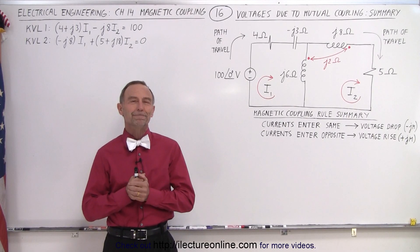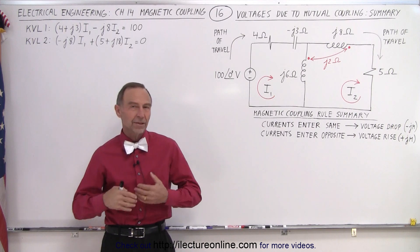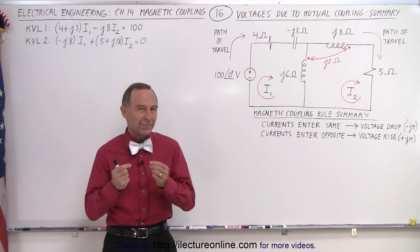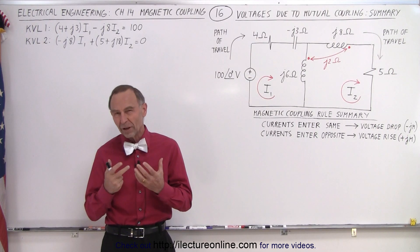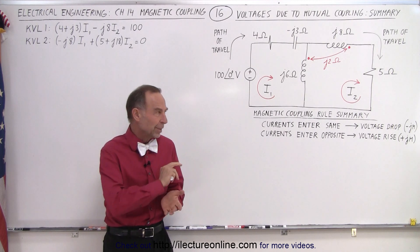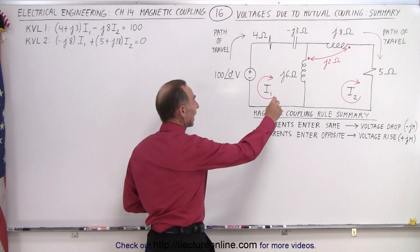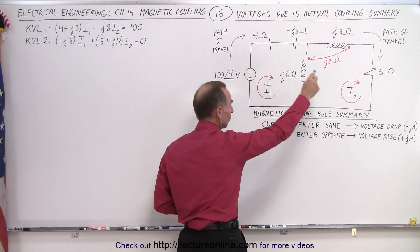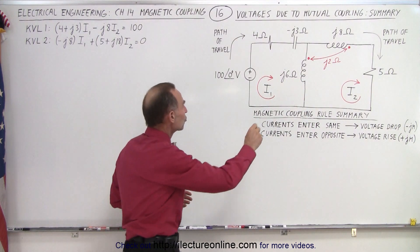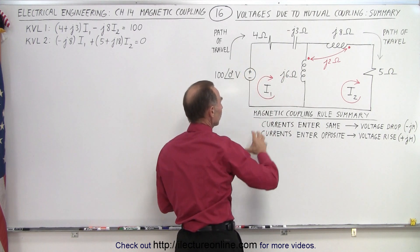Welcome to our lecture online. Let's summarize one more time the rules and the methodology of finding the voltage rises and drops around a circuit when we have magnetic coupling, because it does get to be quite confusing. We went through a lot of details in the previous video but here we want to simplify things. We want to first assume the direction of the currents — usually clockwise — and then travel around each loop or mesh also in a clockwise direction.